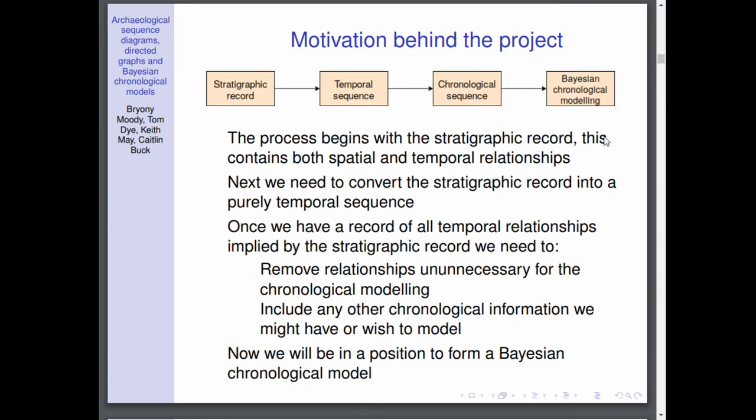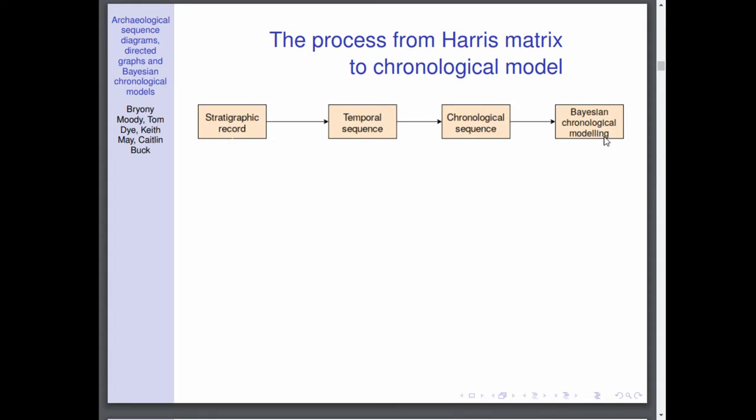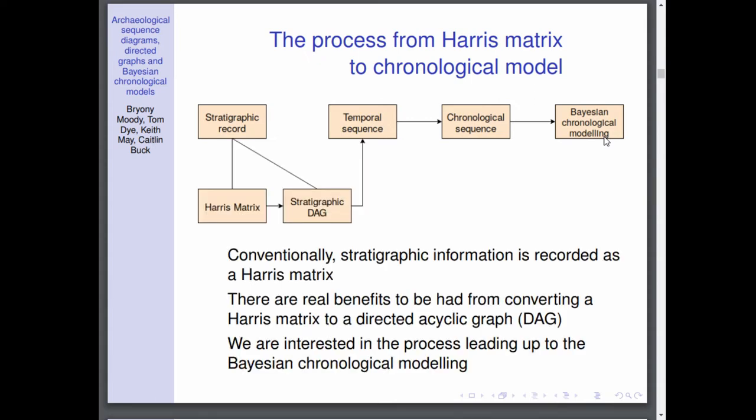Once we've got all this, we're now in a position to form our Bayesian chronological model. Actually I kind of lied a little bit there, the stratigraphic record is separated into two parts. There's a Harris matrix that you're all probably very familiar with, and we're not saying we're going to get rid of that, we just want to add a step after that called a stratigraphic DAG.